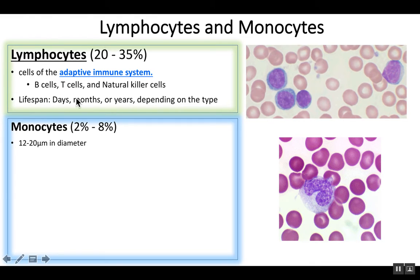Lymphocytes typically have a longer lifespan. Once they start to reproduce and attack pathogens, they might last for a few days until the infection is cleared. Some of them will stick around for months, years, even decades. This again has to do with the fact that they have memory.